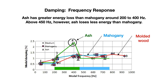This figure organizes the data from the previous table. The horizontal axis represents the frequency — that is, the pitch of the sound — and the vertical axis represents the degree of string vibration loss, with higher values indicating greater loss. The figure clearly shows that ash has greater energy loss than mahogany around 200 to 400 Hz, but above 450 Hz, ash loses less energy than mahogany.